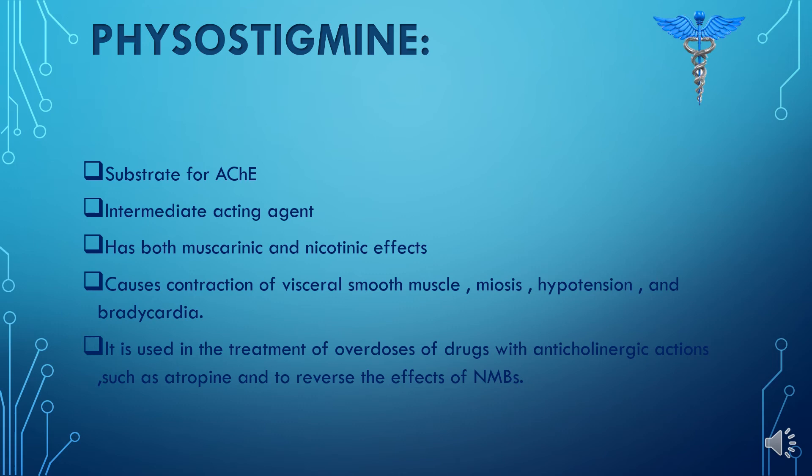If a person overdoses on anticholinergic drugs such as atropine, physostigmine could be the treatment. Physostigmine can also reverse the effect of neuromuscular blockers.